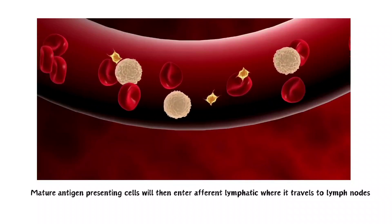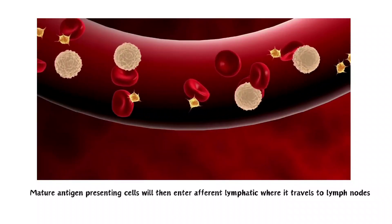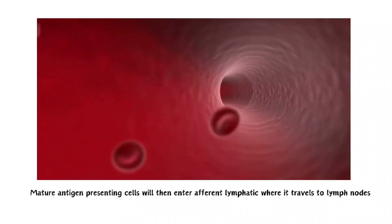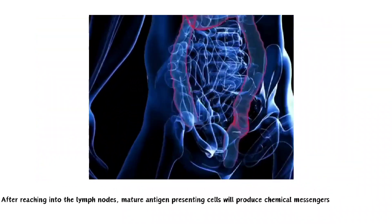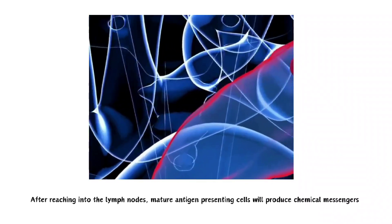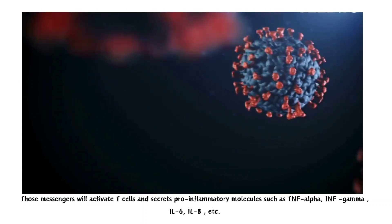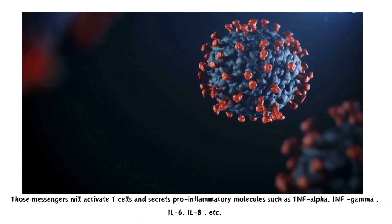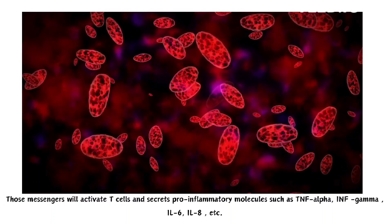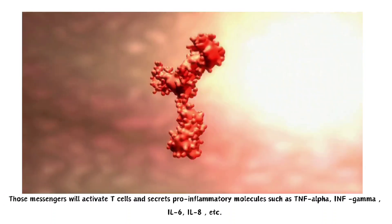Mature antigen presenting cells will then enter afferent lymphatic vessels, from where they travel to lymph nodes. After reaching the lymph nodes, mature antigen presenting cells will produce chemical messengers. Those messengers play a role in activating cytotoxic T cells, which secrete pro-inflammatory molecules also known as cytokines, like TNF-alpha, IFN-gamma, interleukin-6, and interleukin-8.